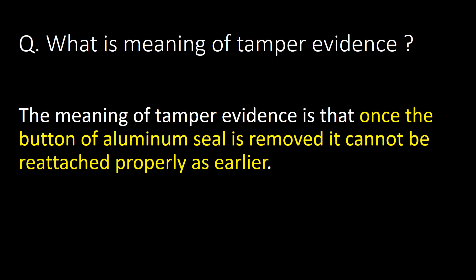What is the meaning of tamper evidence? The meaning of tamper evidence is that once the button of the aluminum seal is removed, it cannot be reattached properly as before.